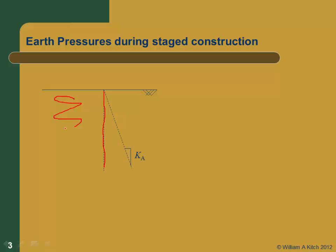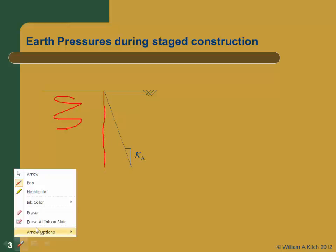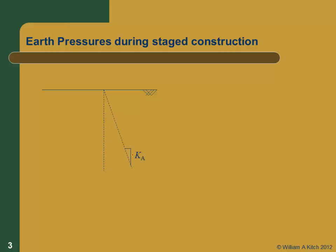This is going to be our wall element here, and we're going to excavate in this area over here. If we excavated down and just let the wall move, we'd reach the active earth pressure. And if we pushed really hard on the wall, we'd reach the passive earth pressure, so we must be someplace in between. When we do our first stage of excavation and excavate down to the first level, we should be following the active earth pressure envelope because the wall is going to bend in — there's no support.